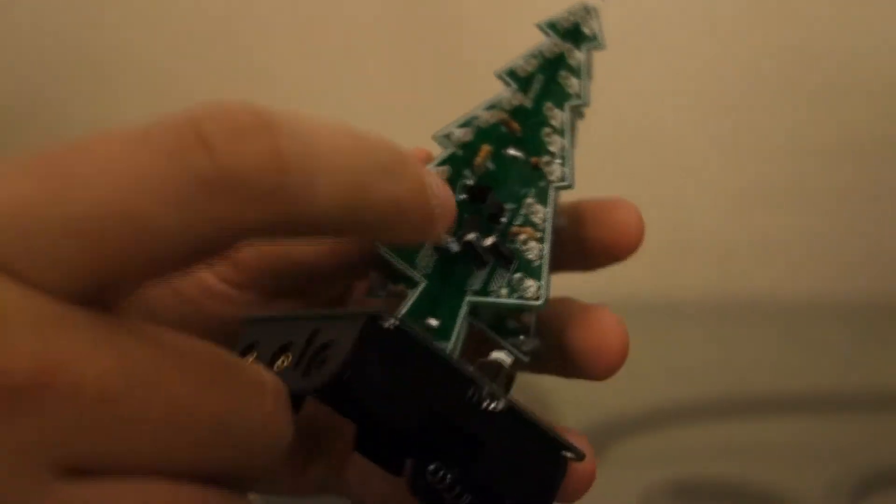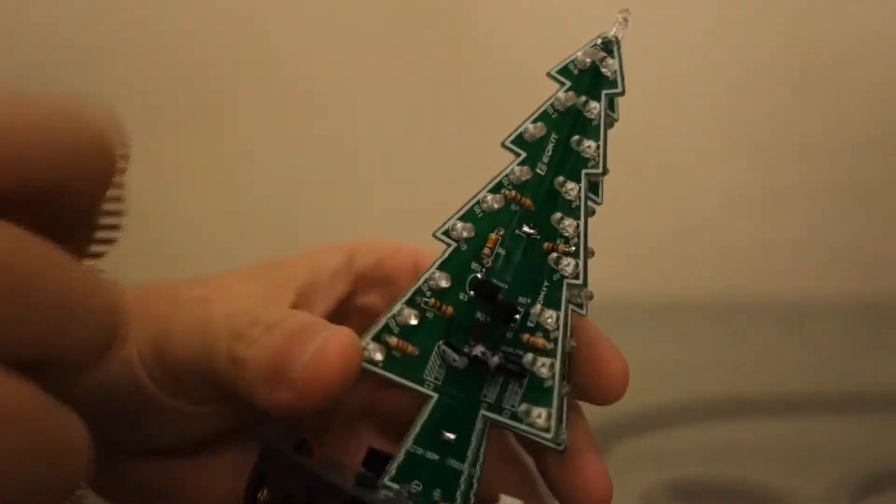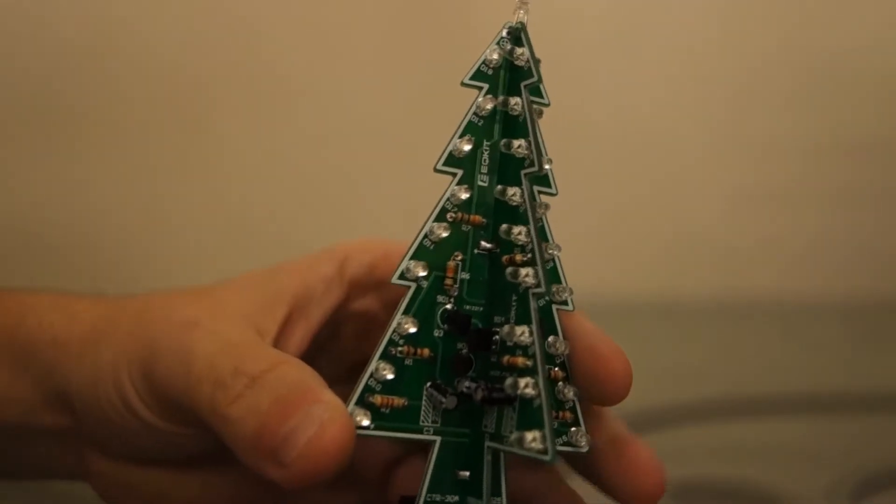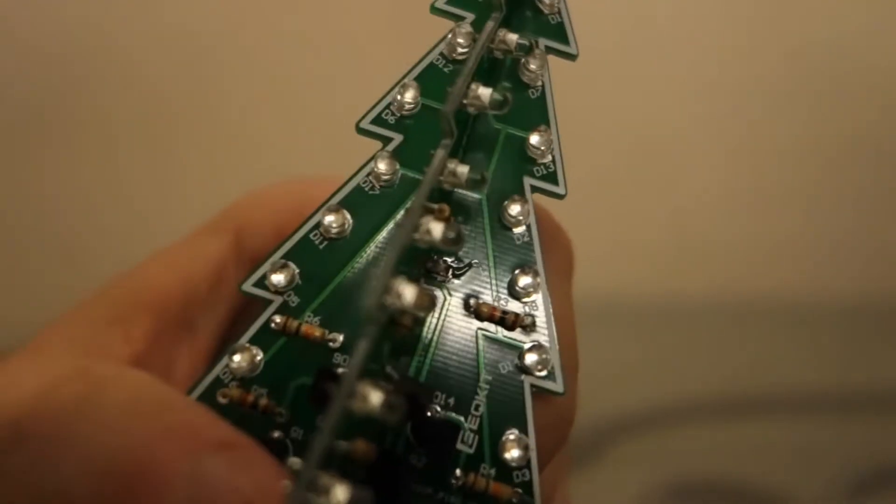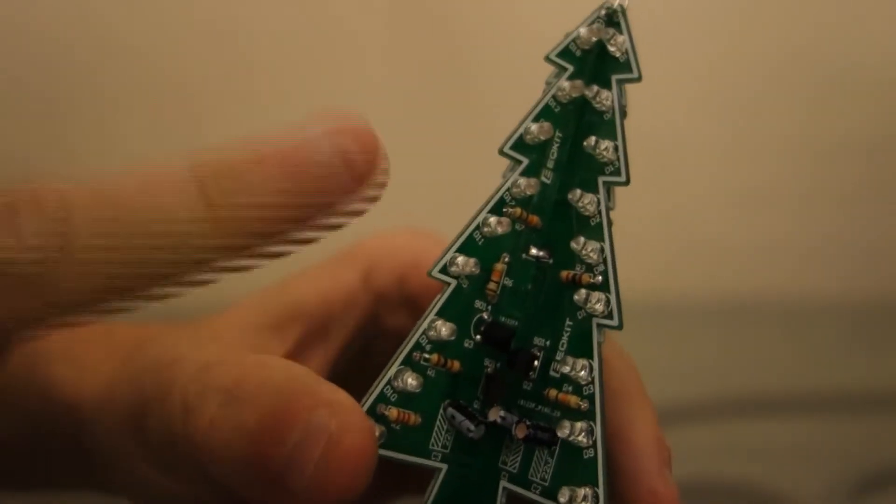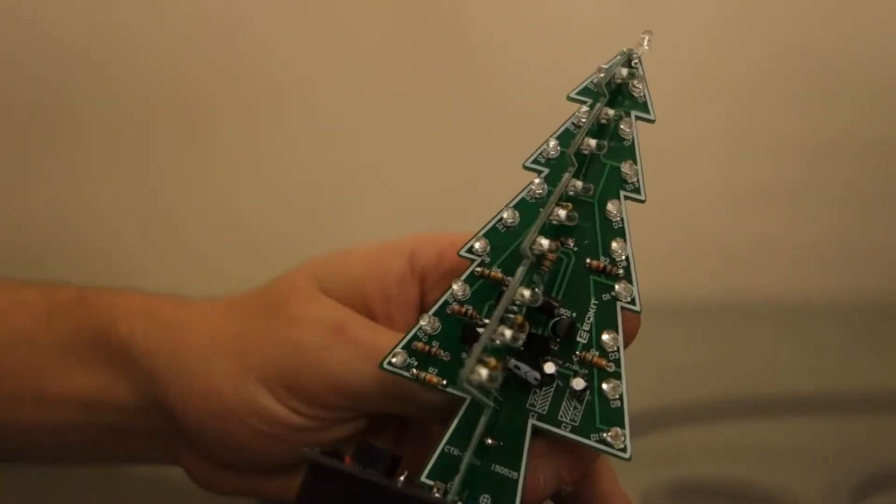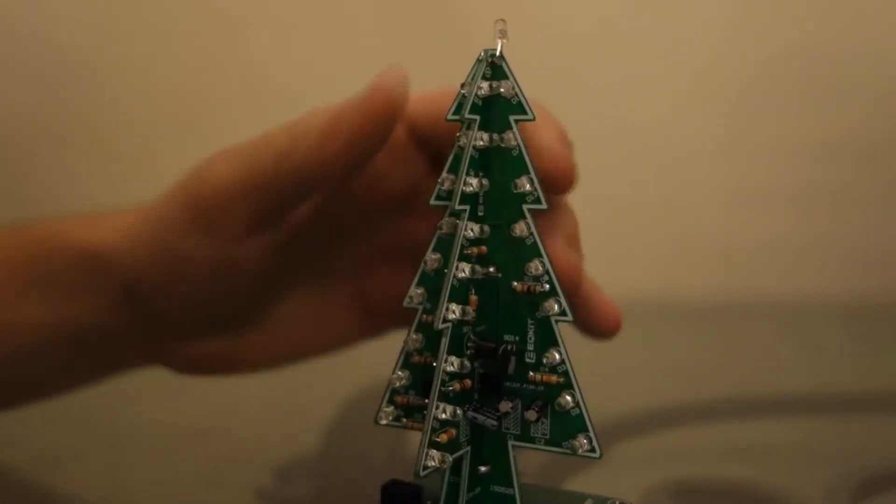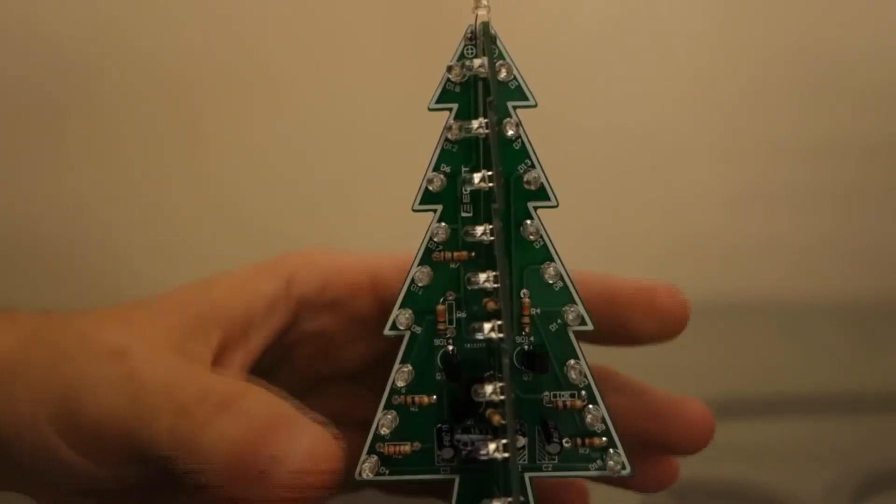I also had issues with polarity on the capacitors and then another problem was that none of the resistors were marked. I mean they have the lines on them that resistors commonly do, you can see that, but I don't know those by heart so I had to look it up. And then the spaces for the resistors, a few of them would say 10k so it's easy to match up the 10k resistors for that, but then the others I just kind of filled in the blanks with the other resistors that I had.